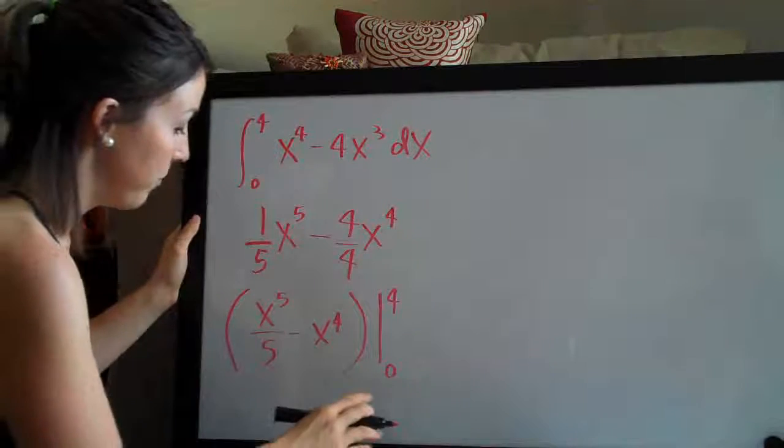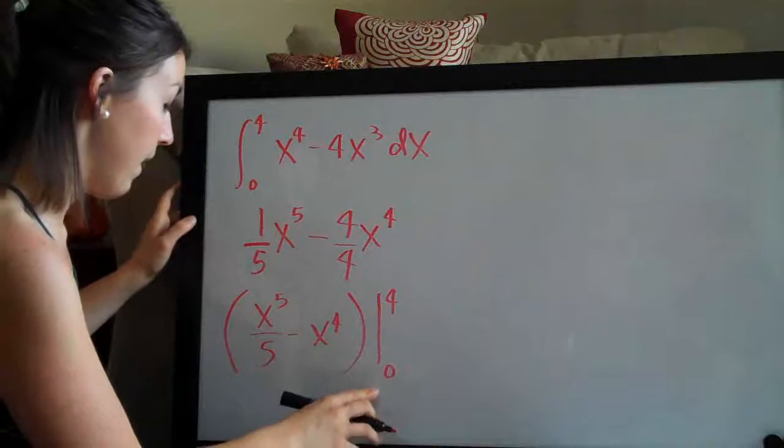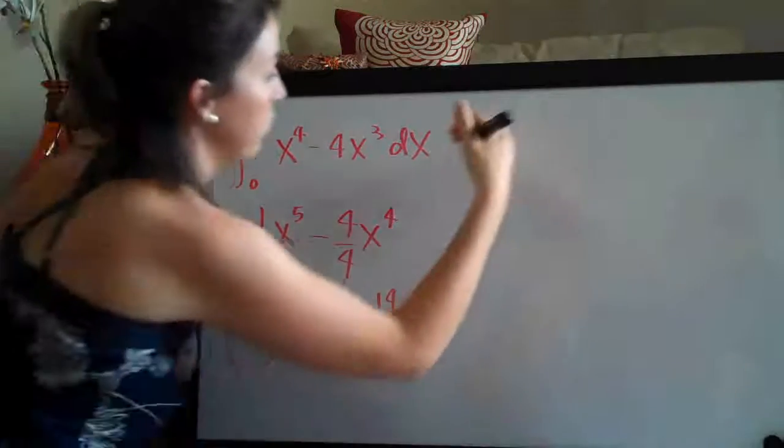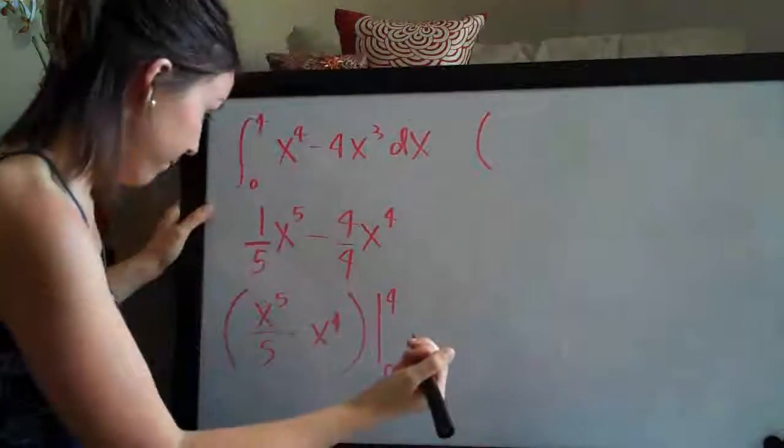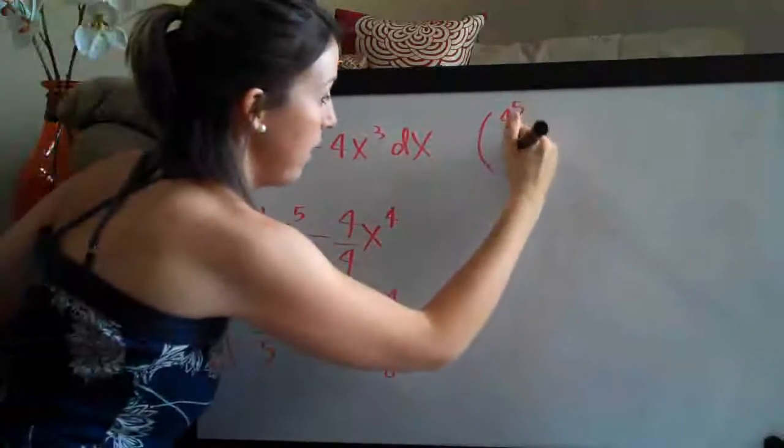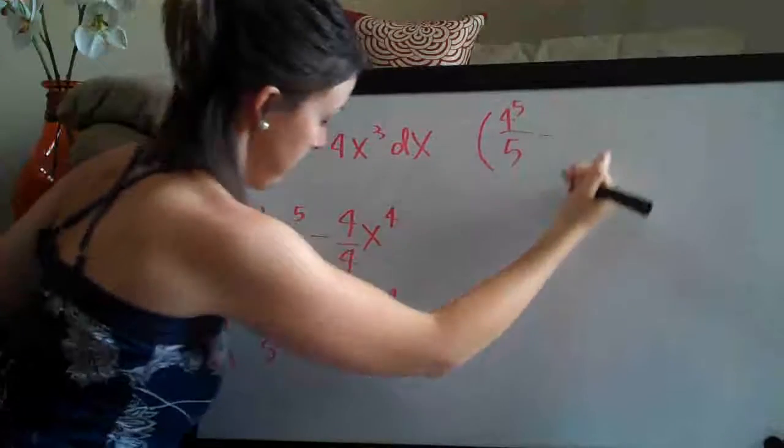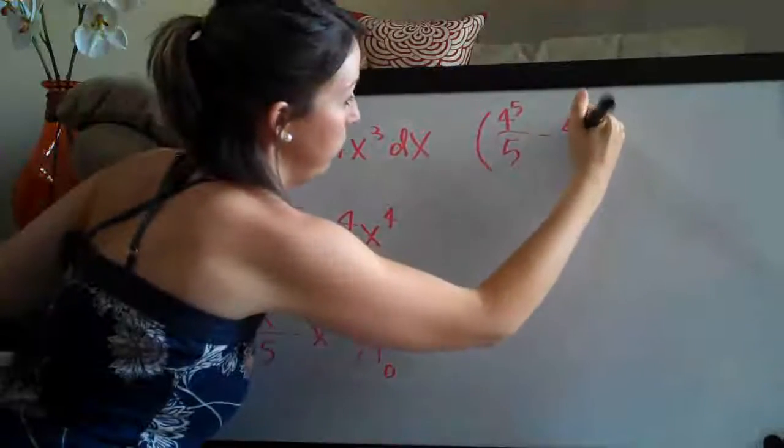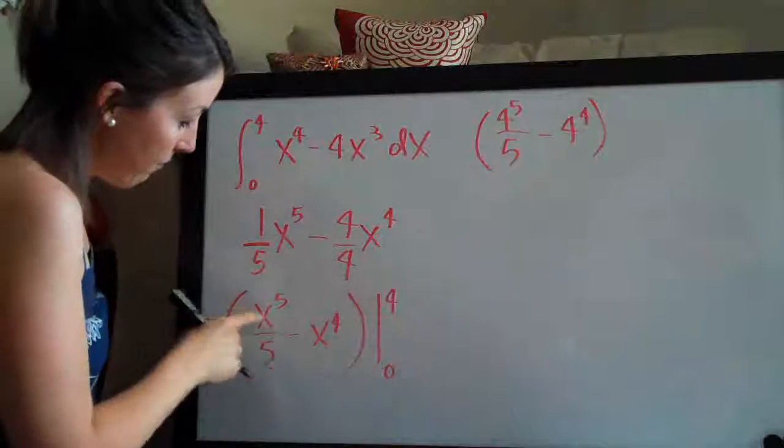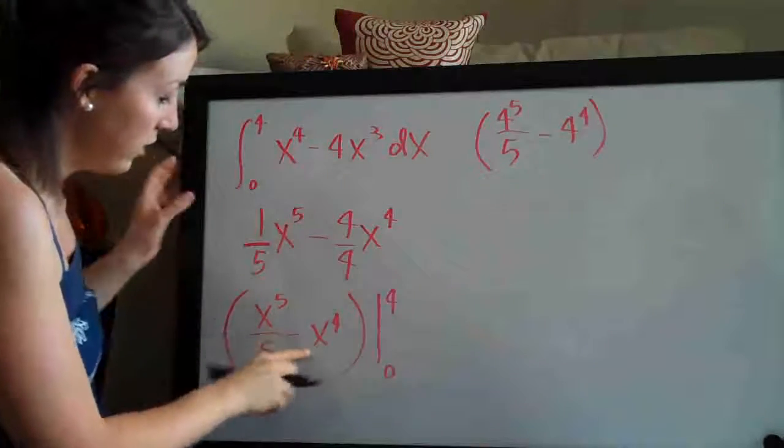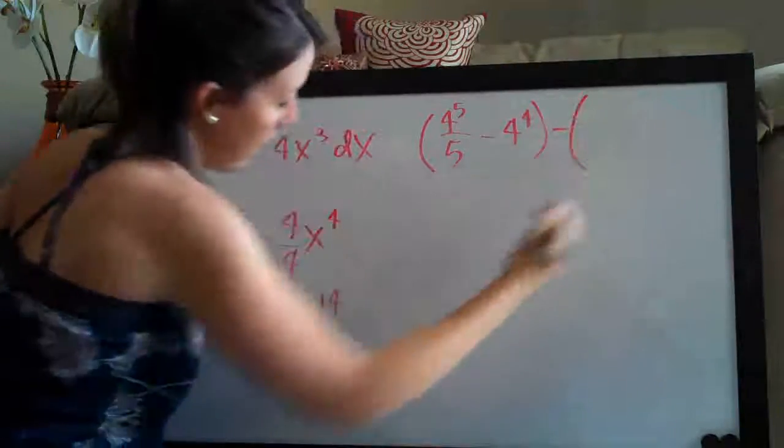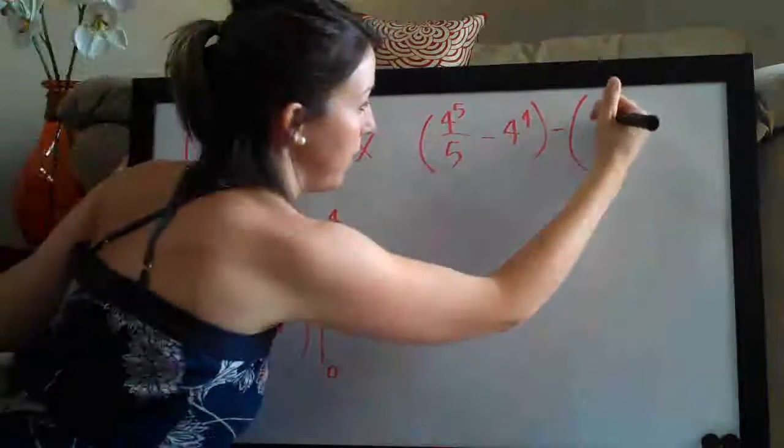So here's my range and what we're going to do is first plug in the top number, four. So we'll have four to the five over five minus four to the four. So you see I plugged in four everywhere where I had an x in this function and then we always write a minus sign and then go ahead and plug in the bottom number in the same spot.